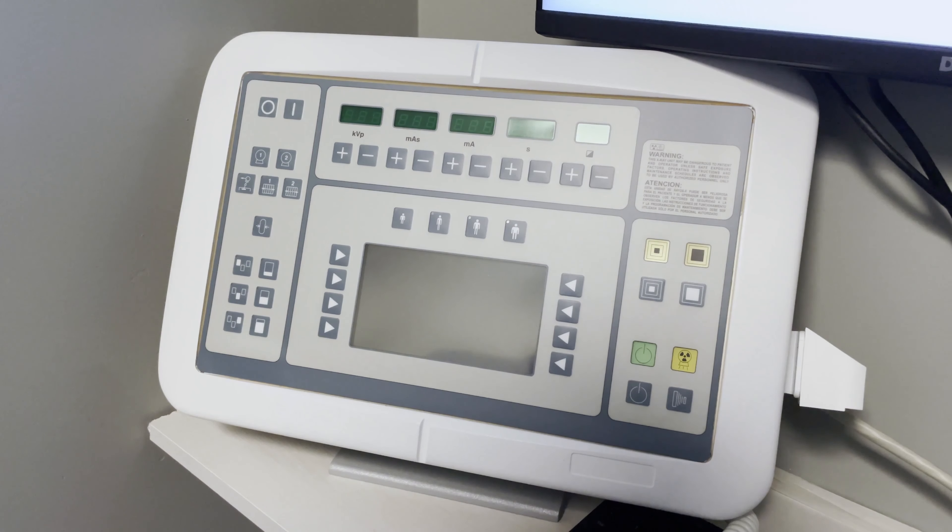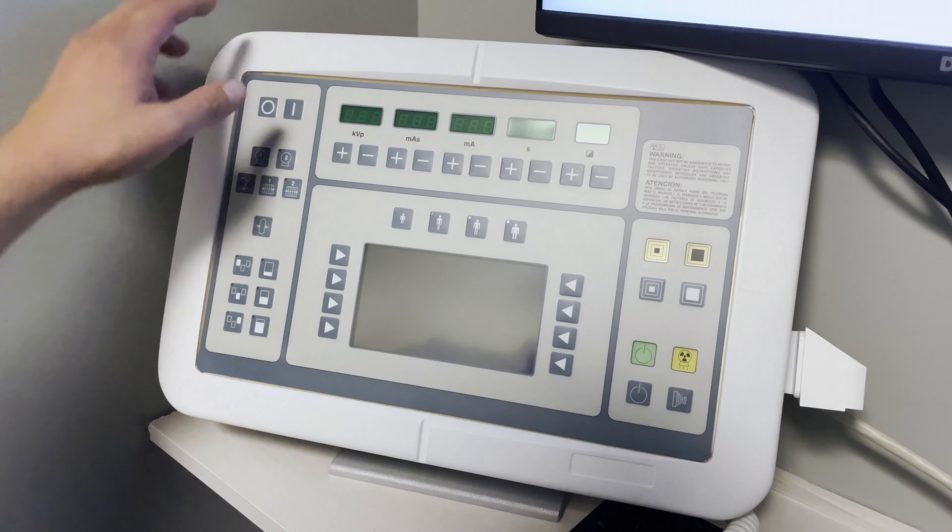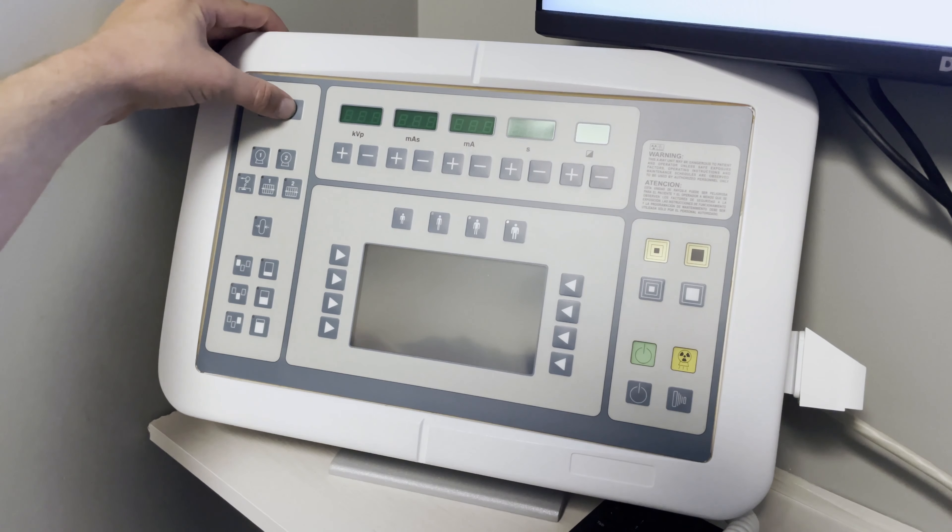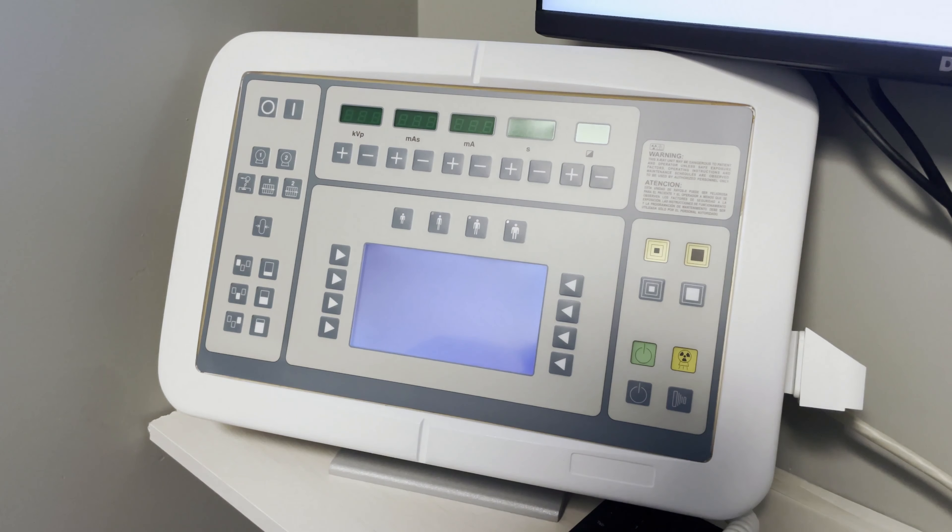Today we're going to go through how to calibrate the TXR Setacal generator. This particular generator is a 32kW generator and we're going to start by hitting the I button, which is the on button. When we hit the I button, it's going to go through a series of tests here and once it's ready we can start the calibration.